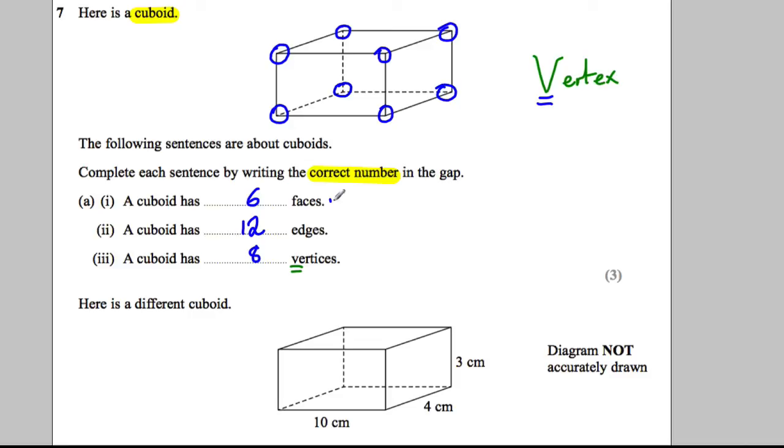This is a nice straightforward question if you just remember: face, I might remember flat. Vertex or vertices, the V I would remember a sharp corner, like the V. An edge, you can just remember an edge is like a straight line. You fall off the edge, like if you were to fall off the edge here, that would be what you call the edge.